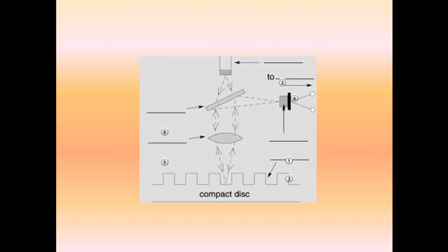Here we can see the answers for the diagram labels: one, two, three, four, five, and six. All of the information is clearly shown here in the diagram.